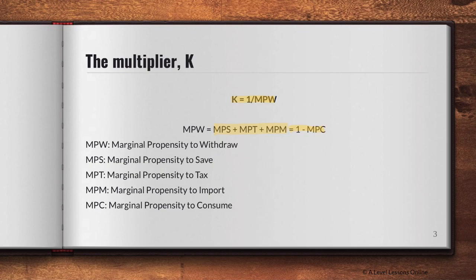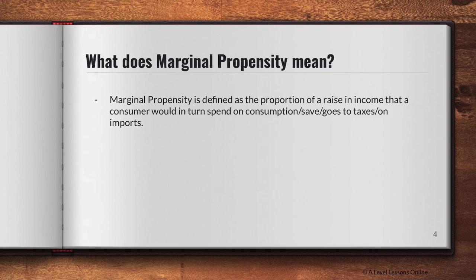Marginal propensity is defined as the proportion of a rise in income that a consumer will spend on consumption, savings, taxes, or imports. When looking at consumption, you're always looking at domestic goods only — that is important in macroeconomics. So it's the proportion of income that people would spend on either consumption or the withdrawal components of savings, taxes, and imports.